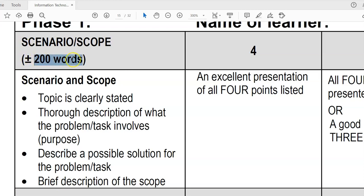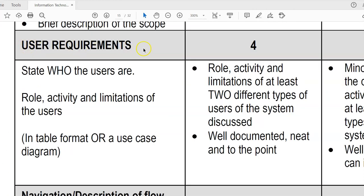In total the scenario and scope should be more or less 200 words. The next main heading is the user requirements and here we need to state who our users are.